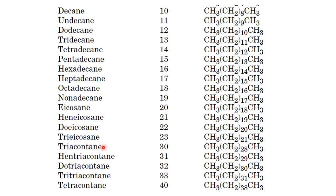30 is called triacontane. After this, -contane is used as a suffix after every 10 numbers. For 40, we use tetracontane — tetra for 4 and -contane as the suffix. For 50, pentacontane; for 60, hexacontane; then heptacontane, octacontane, nonacontane, and so on. Remember to use the prefixes hen-, du-, tri-, tetra-, etc. before these names. For example, 31 is called hentriacontane, where hen- is for 1 and triacontane is for 30.